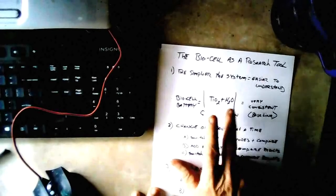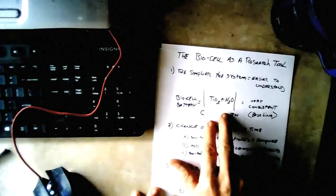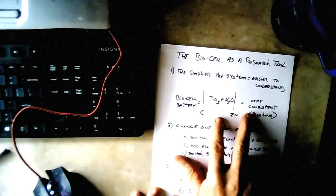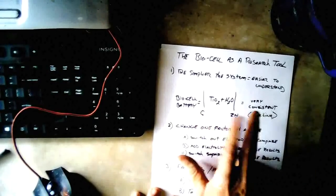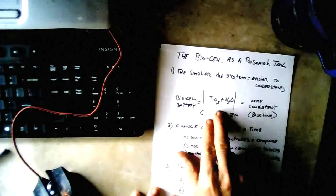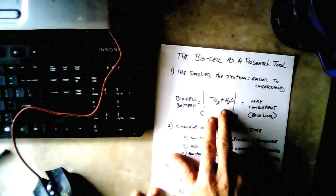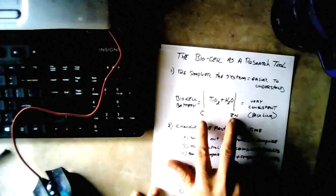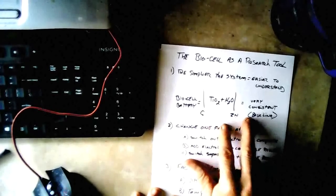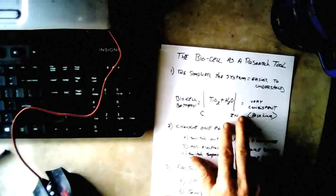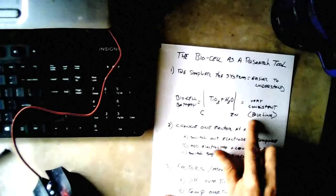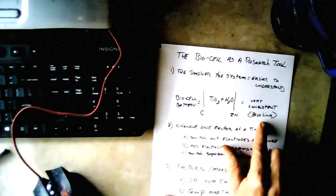And because it's such a simple cell, it also produces very consistent results. As long as you use the same mixture of titanium dioxide and water between the same two electrode types, you're going to get exactly the same result every time. And so that consistency gives you a baseline for doing your research on it.